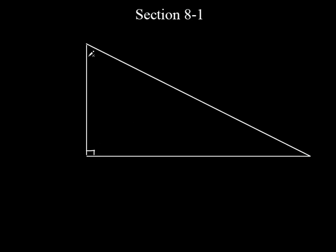Let's talk about the other two angles. What about this angle and this angle? They're both acute angles. On any right triangle, no matter how you draw it, the other two angles will always be acute angles — both less than 90. More specifically, they add up to 90 because these two have to add up to 90, and then this is 90, so all three add up to 180.